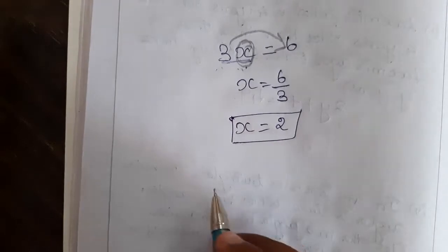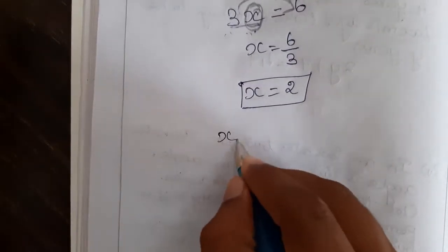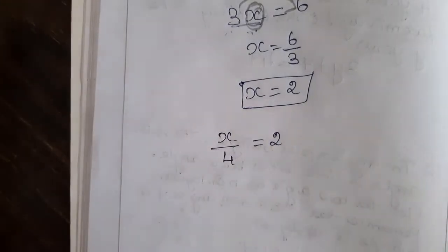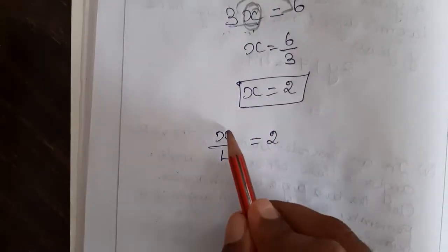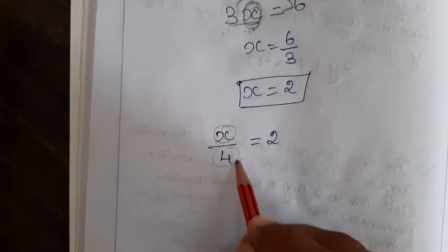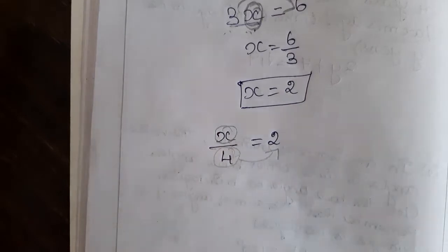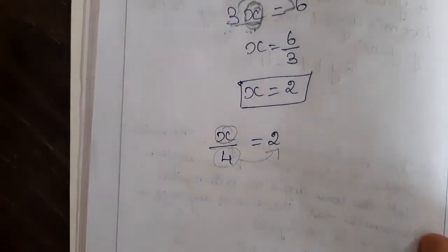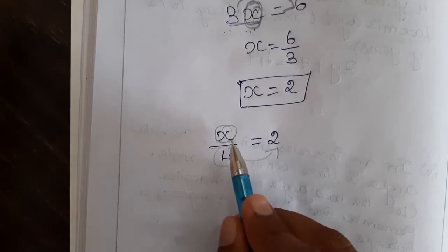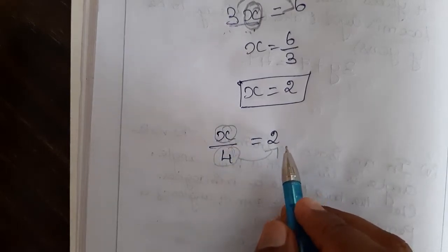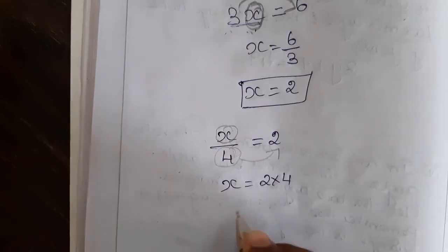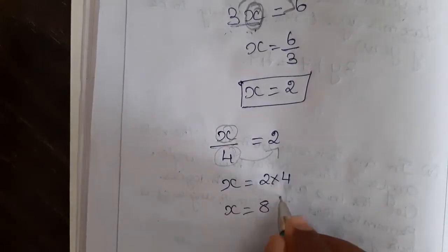Same for division. Let me consider x by 4 is equal to 2. In this equation, x is what we have to find, and 4 is in division. Let me transpose to the next side, which is RHS. The 4 here — the operation is division — so while taking that to the other side, it will become multiplication. So x is equal to 2 into 4.